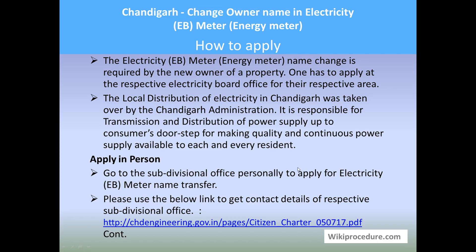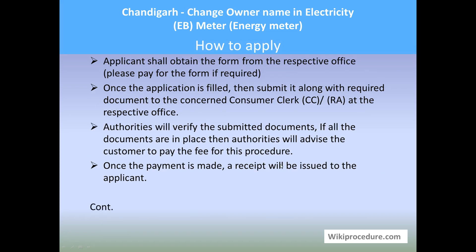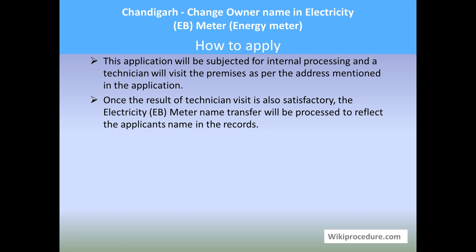You have the contact list for the respective officials for your area — select them and go there directly. Once you go there, obtain an application form, fill it out, and if there is a fee requirement, pay as per the requirement. Attach all the required documents and submit to the concerned consumer clerk. The authorities will verify the submitted information and documents. If all are in place, they will advise you to pay the respective fees. After payment, you will receive a receipt, and the application will be subjected to internal processing. A technician will be allotted to perform a physical verification of the meter's working condition. If the technician provides a satisfactory report, the electricity meter name transfer will be done and reflected in the records.